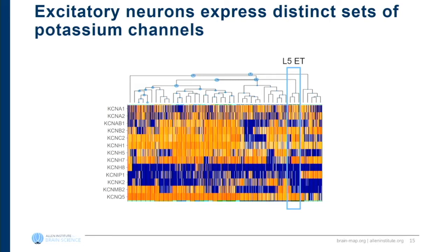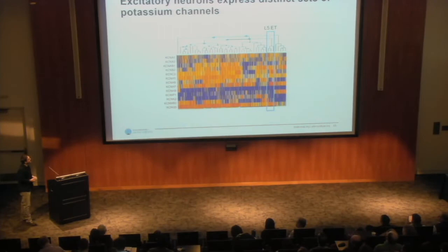Looking at potassium channels across excitatory cells, you can see different banding patterns and very distinctive channel properties associated with each type. The layer 5 ET cells have some really interesting electrophysiological properties, which Brian will now present. This gives a snapshot of how we're starting to think about how ion channels might inform the electrophysiology and function we're observing.